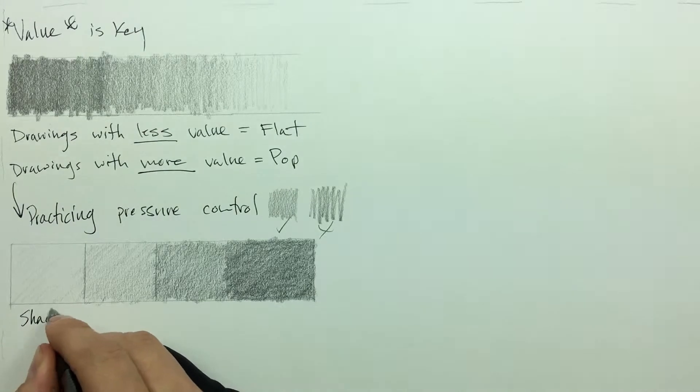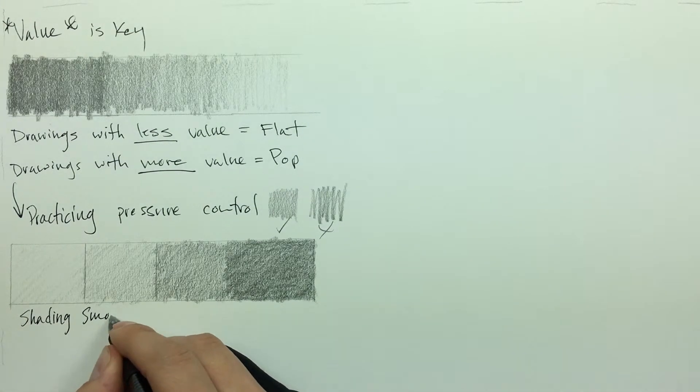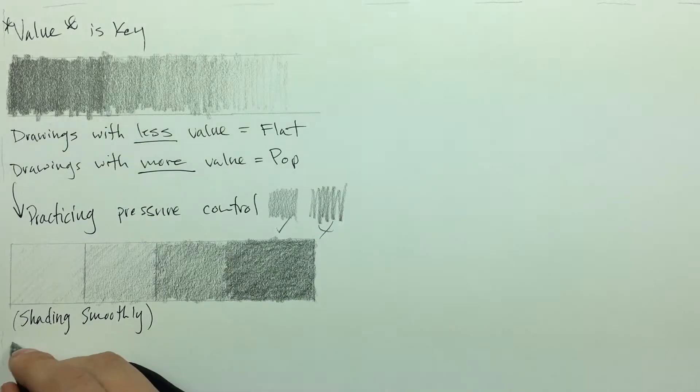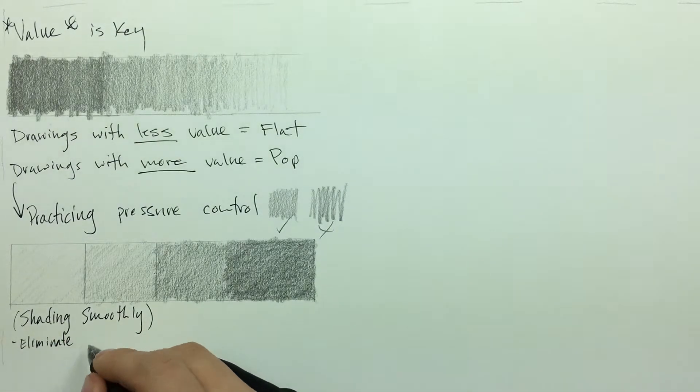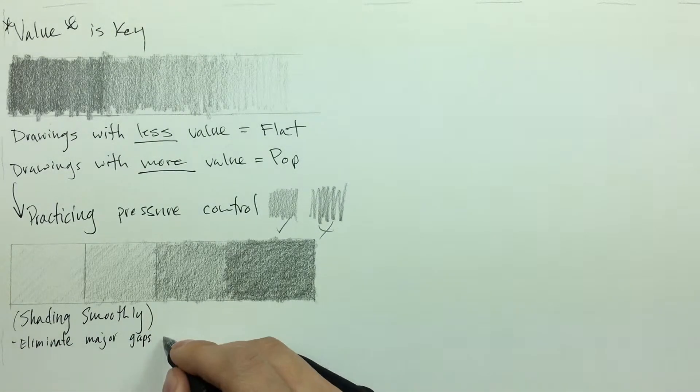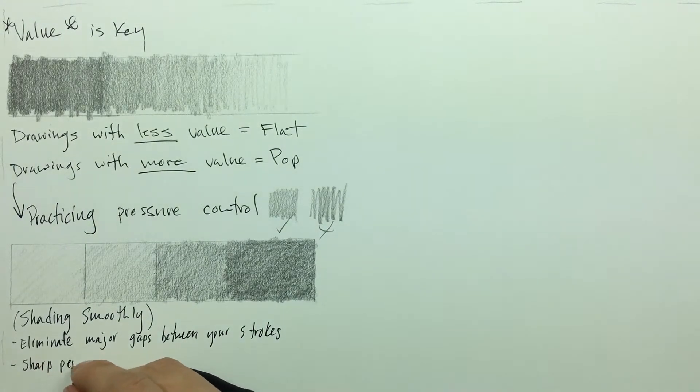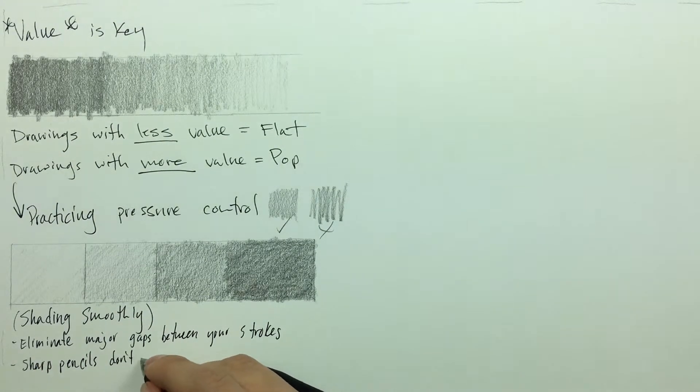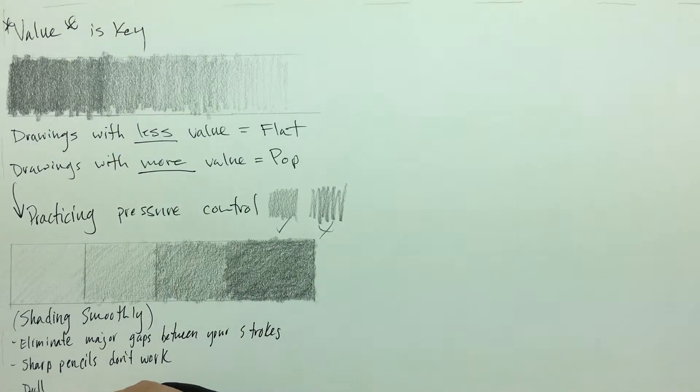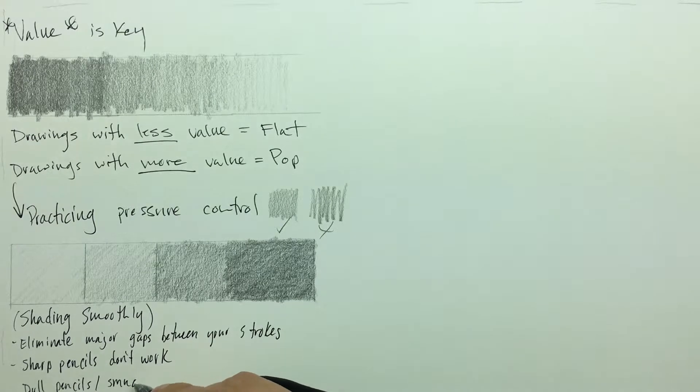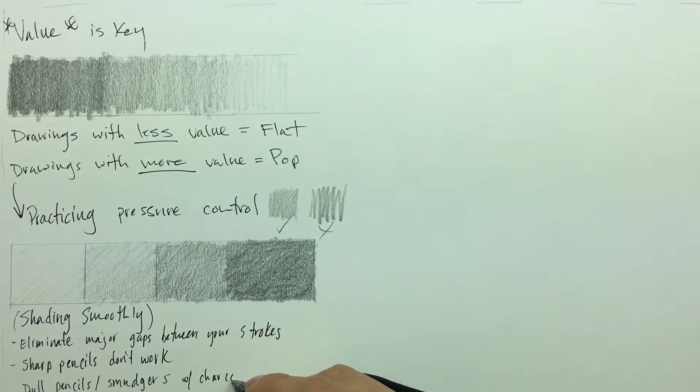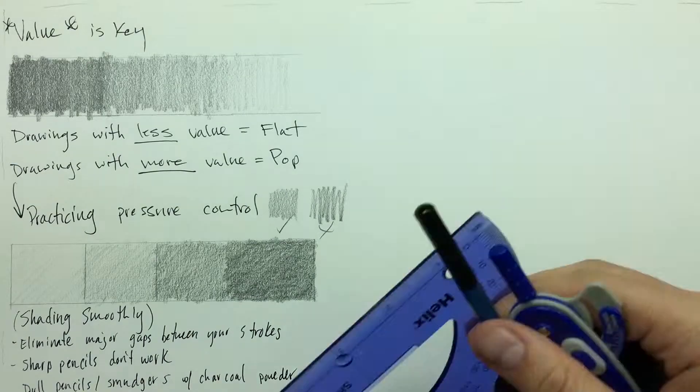Okay so moving on to shading smoothly, there are some tricks you can use. One of these tricks is what we just spoke about—eliminating major gaps between your strokes. This will give you a very nice even distribution. I have found that sharp pencils tend to not work as easy. You actually want to use a duller pencil or you can use a smudger if you tend to work with charcoal, or you can use charcoal powder, but that is a preference that's completely up to you.